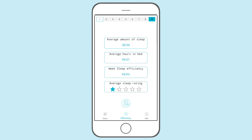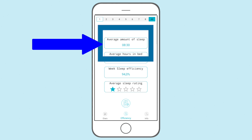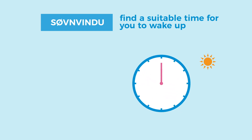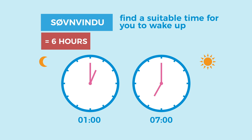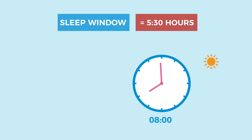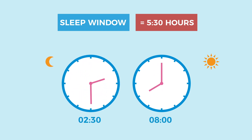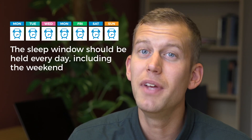To find your new sleep window, check the sleep diary you started last week. Here you'll find your average sleep duration from the whole week — this is the length of your new sleep window. Then find a suitable wake-up time. For example, if you have to get up at 7 for work and your sleep window is 6 hours, go to bed at 1am the entire first week. If you're free to wake up whenever you want, set a wake-up time that suits your everyday life, but don't get up too late to avoid missing crucial morning light that helps regulate your circadian rhythm. For example, with a sleep window of 5.5 hours, you could set your wake-up time to 8am and bedtime to 2:30am. This sleep window should be held every day, including weekends, for a minimum of one week.